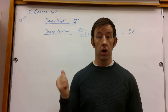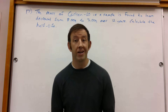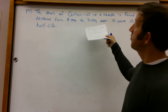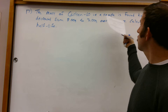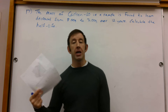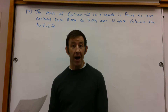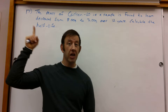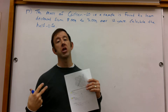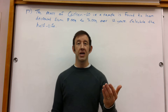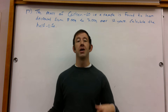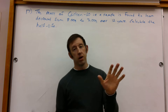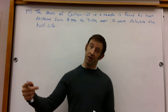That is our practice with the decay equations. We are now going to move on to half-life questions. Moving on to number 17 from the exam review. The mass of a sample was found to have decreased from 8 grams to 3 grams over 12 years — calculate the half-life. Half-life is a measure of how much time is needed for one half of a radioisotope to decay into something else. Disclaimer: these questions can get way more complex than what we're doing. We're just introducing the ideas at this point.